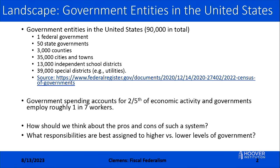Let's dive in with some big picture facts on the US system of fiscal federalism. There is a genuinely astonishing number of government entities in the United States — over 90,000. There is of course the one unitary federal government, 50 state governments, but also 3,000 counties, 35,000-plus cities and towns, 13,000 independent school districts, and 39,000 so-called special districts, many of which are providers of electrical, water, and gas utilities around the country.